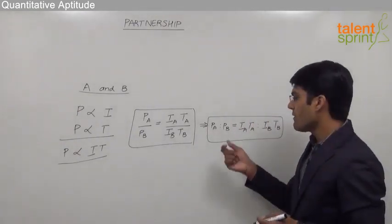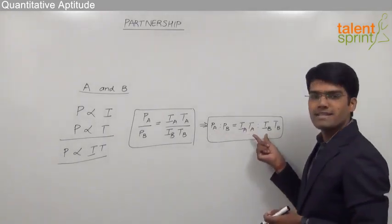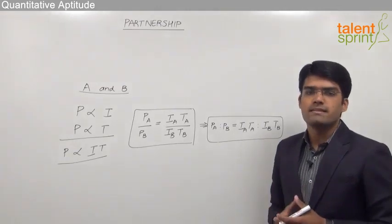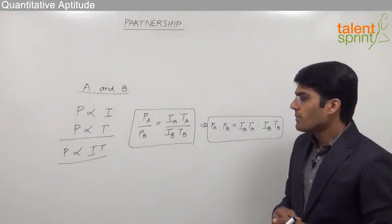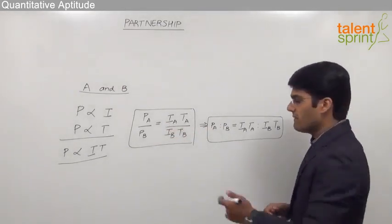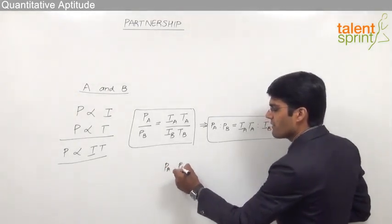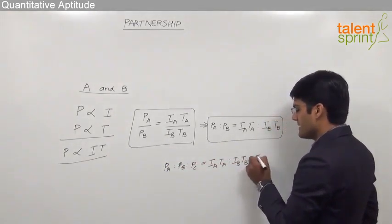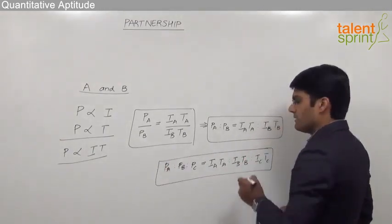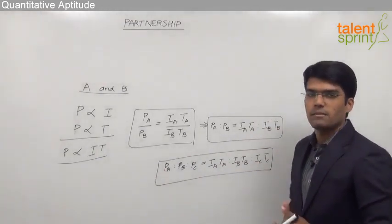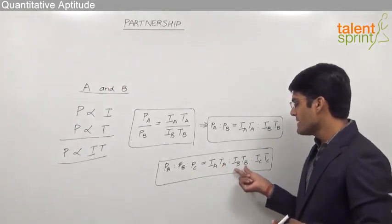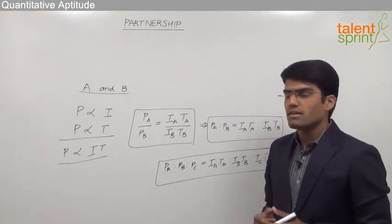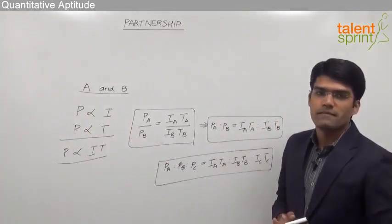To find the individual profits of any partner, we must first get the ratio using the investments and times of investment. Once we get the ratio of profits, individual profits can be calculated from the given total profit. Similarly, when there are three partners A, B, and C, the same logic applies: PA : PB : PC = IA×TA : IB×TB : IC×TC. Profit is proportional to investment multiplied by time of investment for each partner, and from this ratio we can find each individual profit.